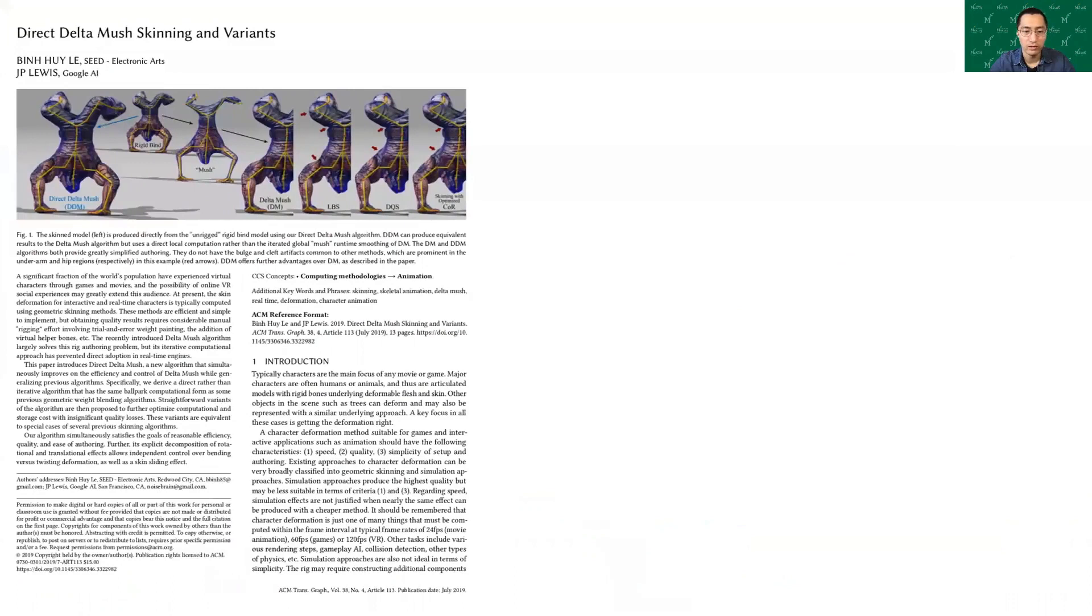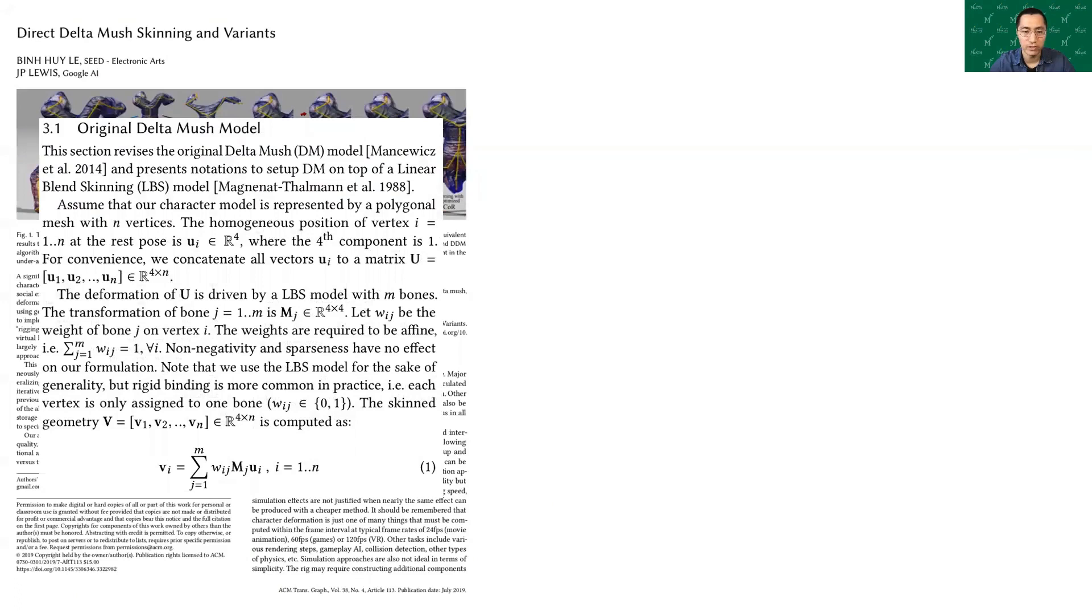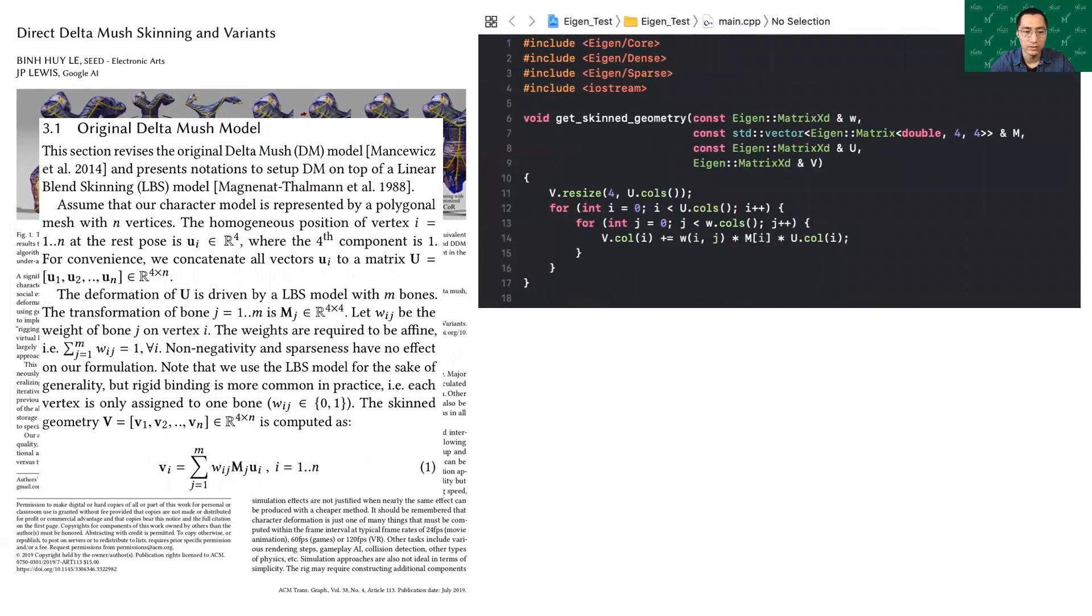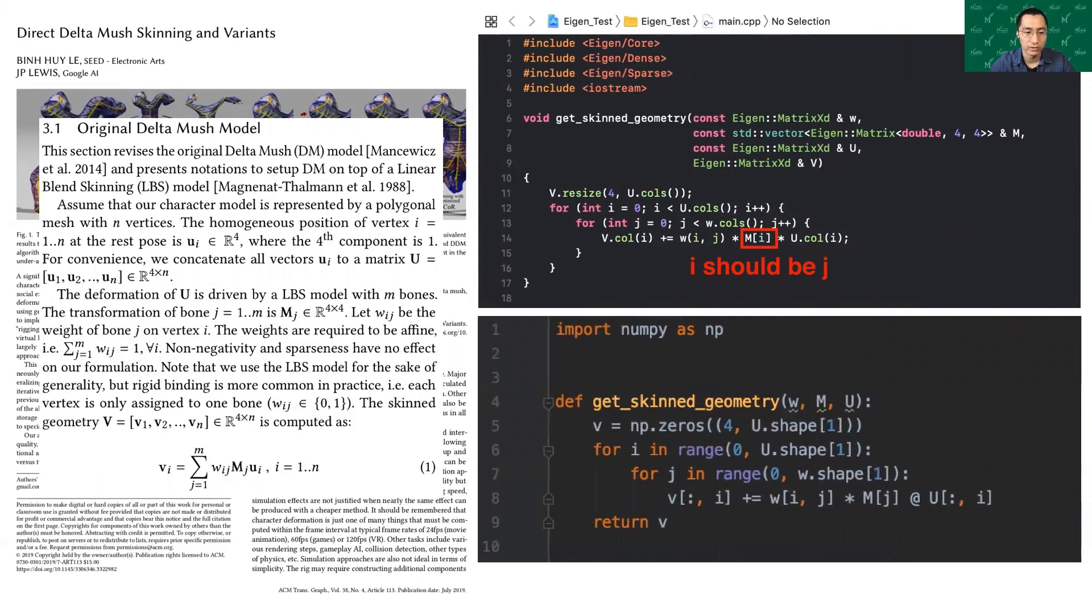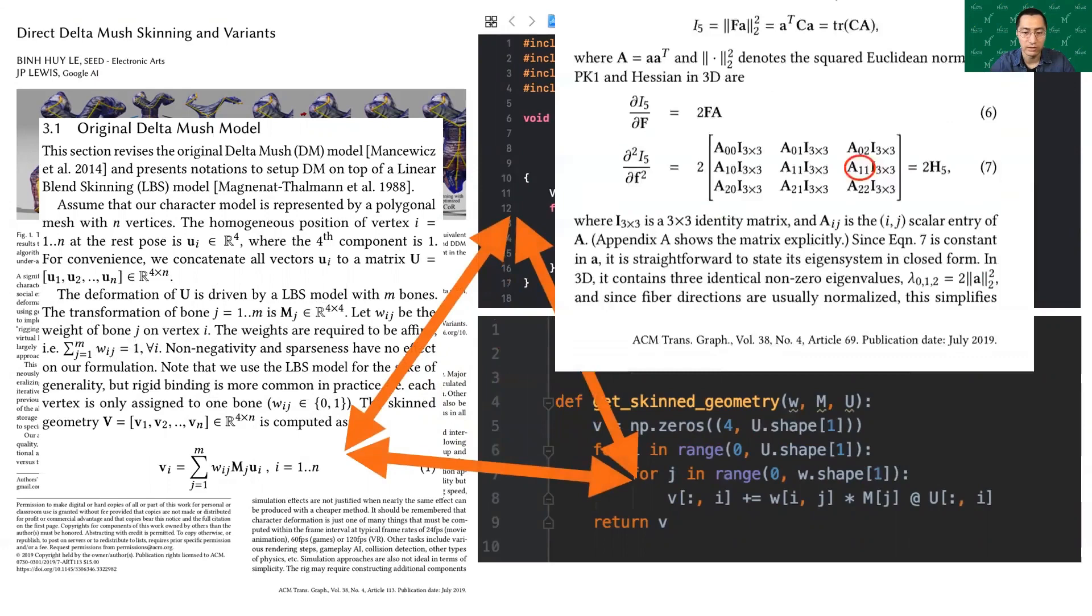As a PhD student, we often need to evaluate papers. We read the paper and find the formula. For this example, we may first implement it in C++. During implementation, it's easy to create bugs that we may never notice. Later on, we may switch to Python and need to reimplement the same formula again. In general, it's inconvenient to maintain consistency, especially when the formula itself has typos sometimes.